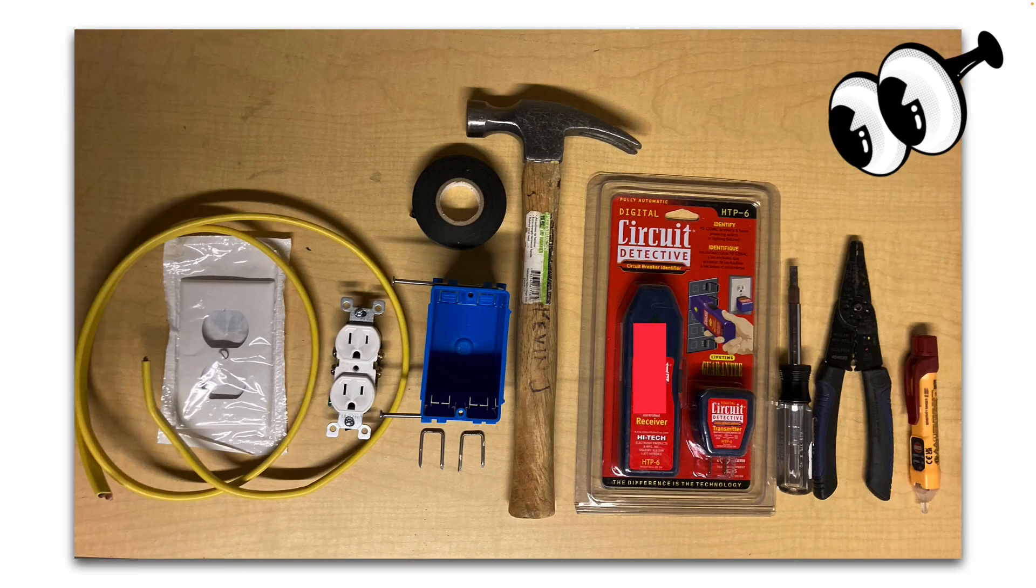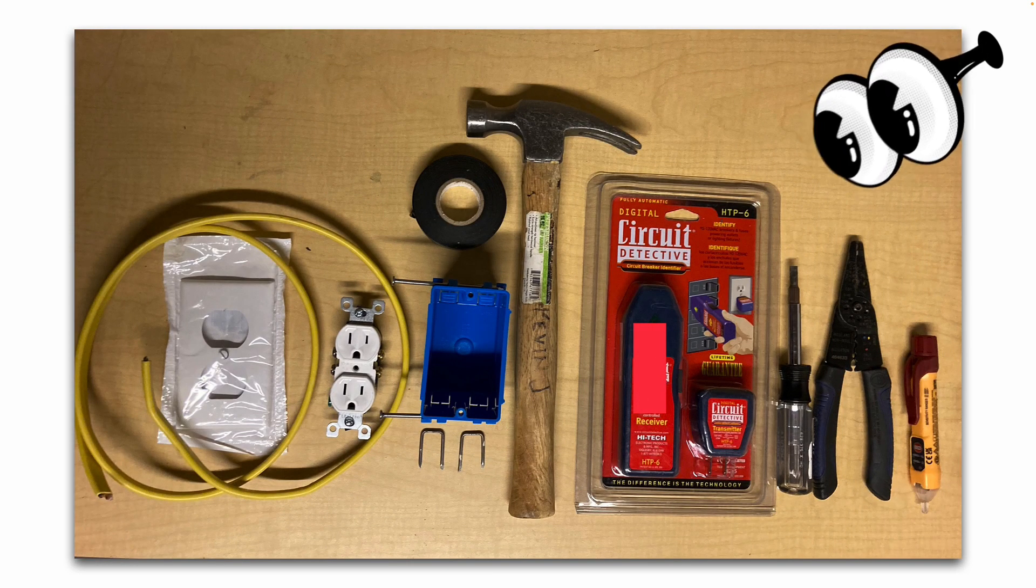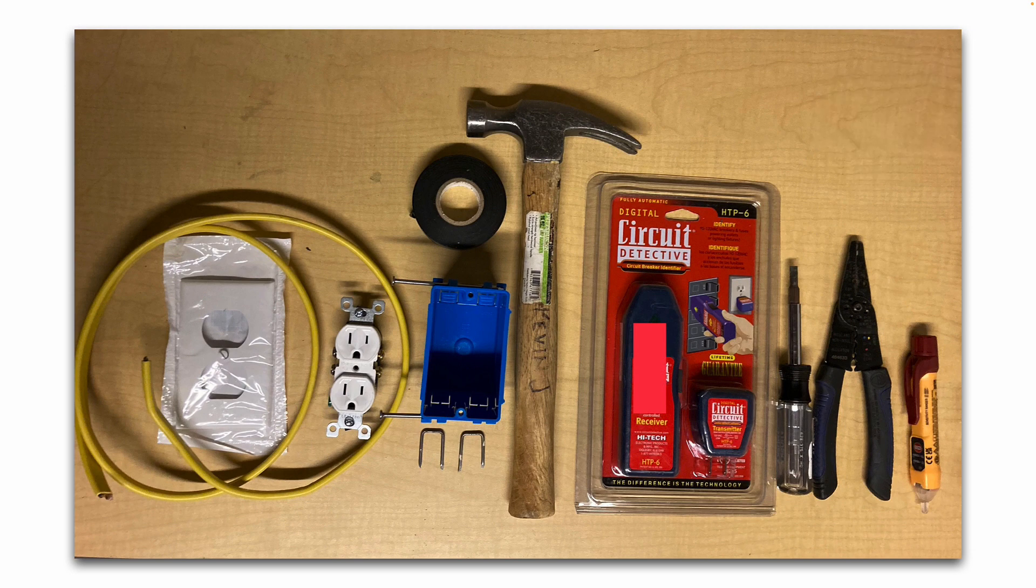Here are the tools we're going to be using today for this project. We have some Romex, the receptacle—this is a 120-volt, 15-amp receptacle—our box, staples, cover plate, a hammer to install the staples, electrical tape to wrap around our screw terminals on our outlet, and a circuit breaker finder, screwdrivers, wire crimpers, strippers, and a non-contact voltage tester.